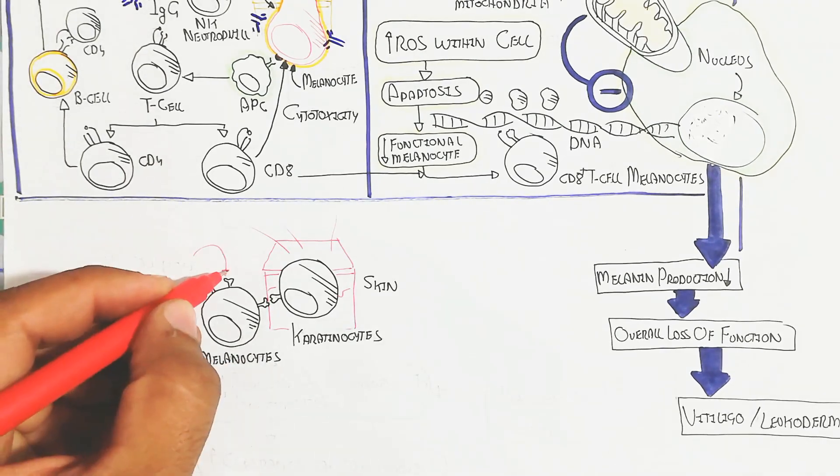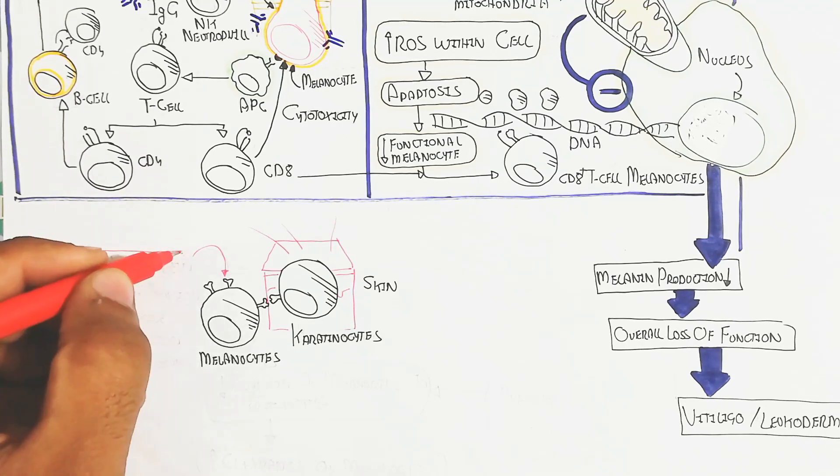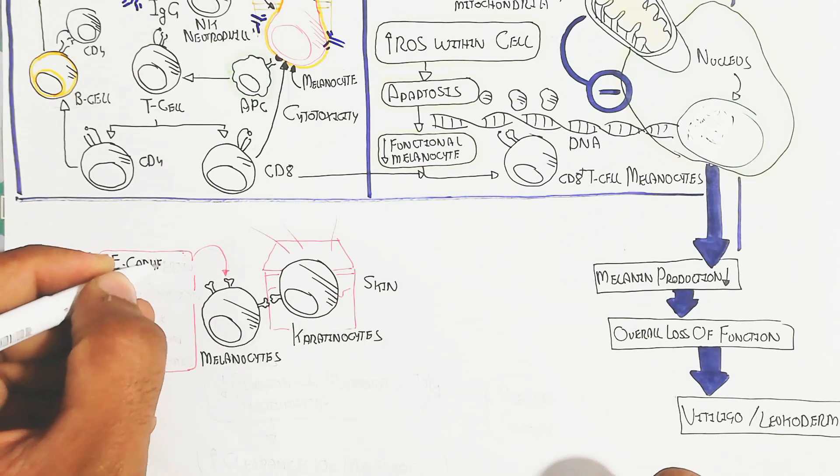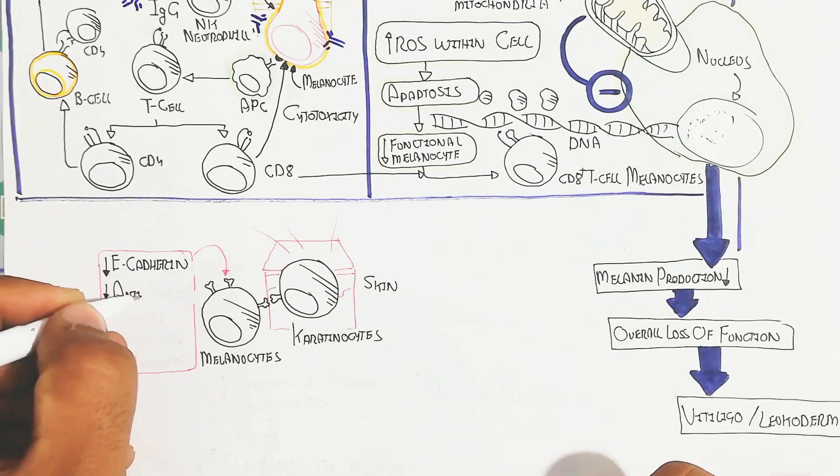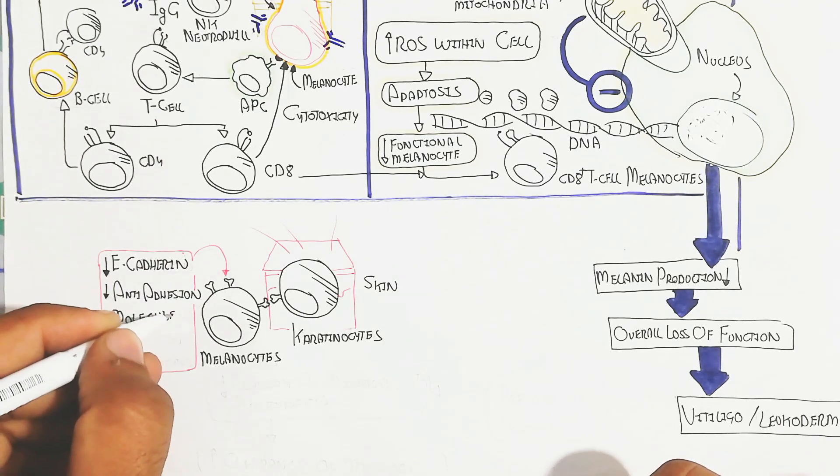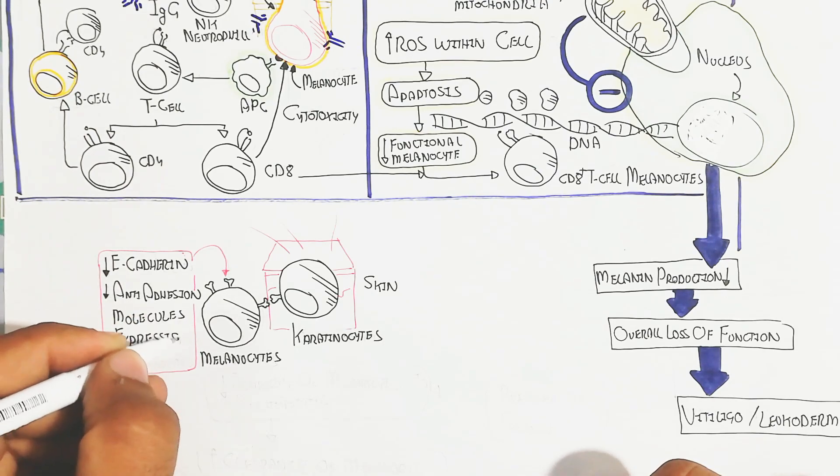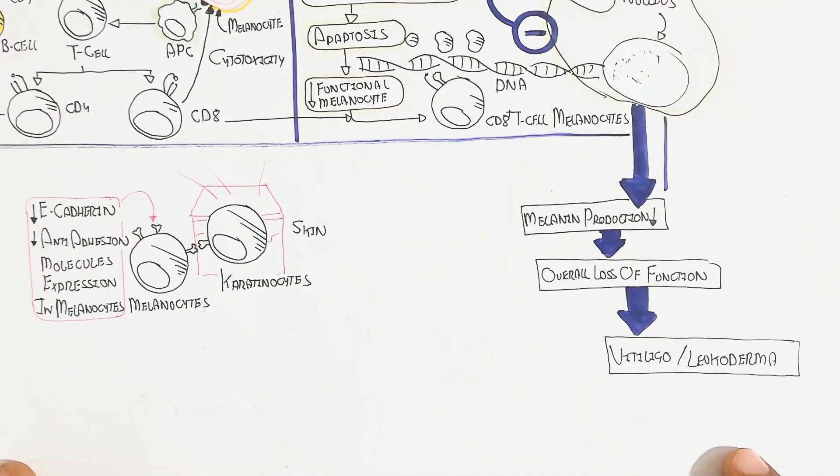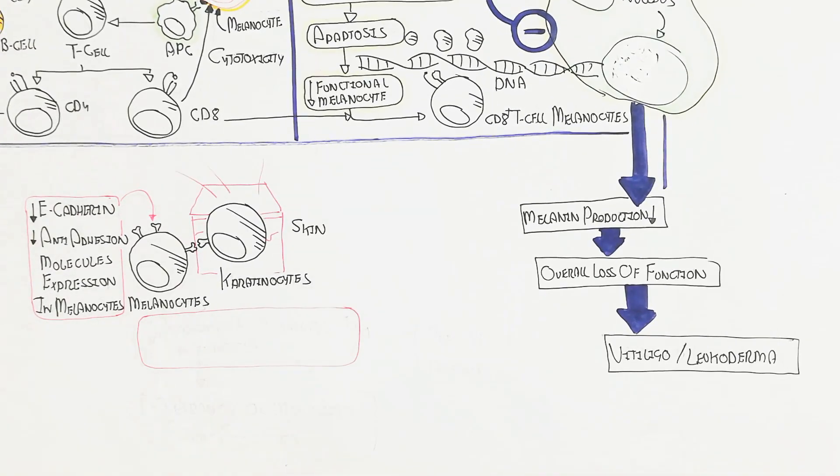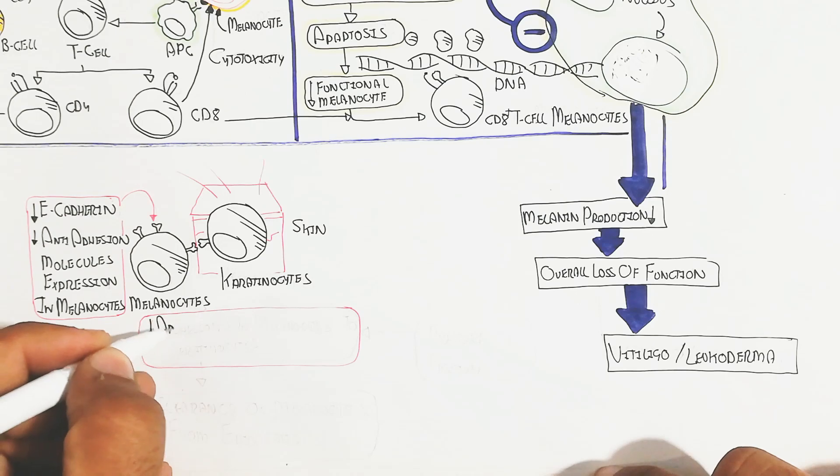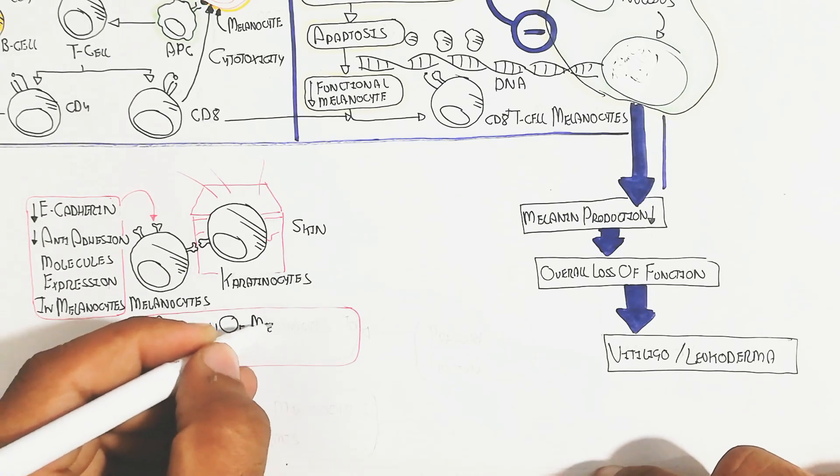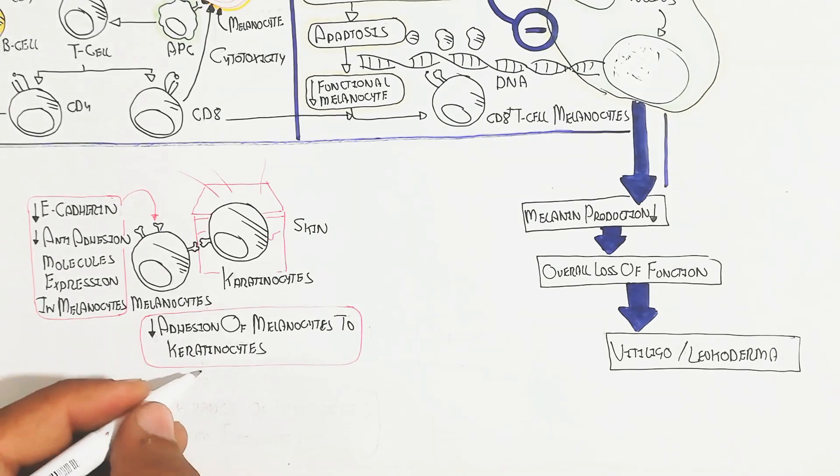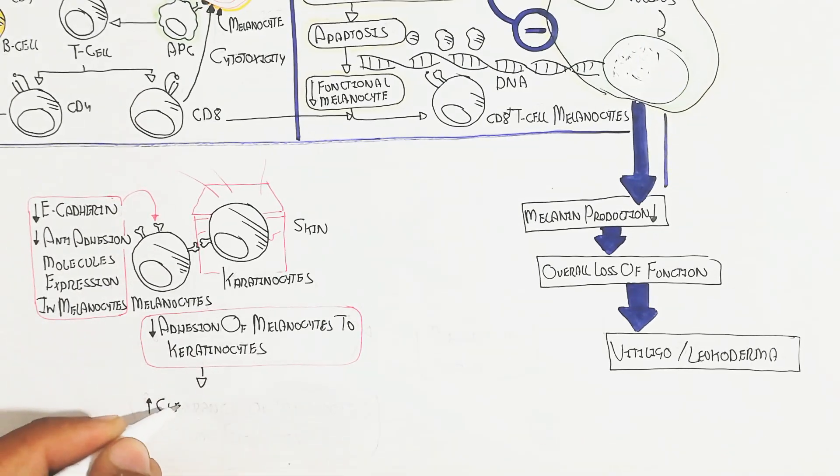Here, the melanocyte and keratinocyte contain E-cadherin, and anti-adhesion molecules are decreased. This decreases molecule expression in melanocytes, which leads to decreased adhesion of melanocyte to keratinocyte, increasing clearance of melanocytes from the epidermis.